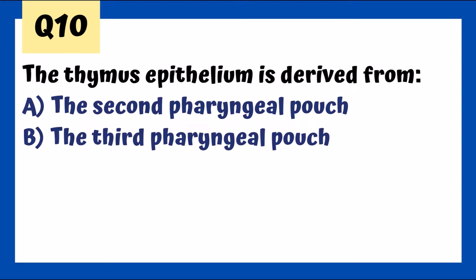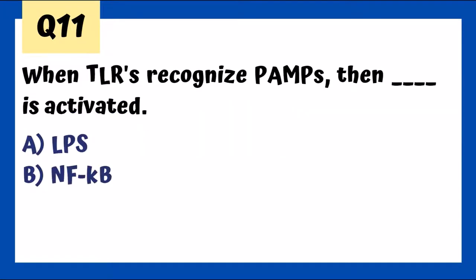The thymus epithelium is derived from the third pharyngeal pouch. This is also associated with DiGeorge syndrome, because in DiGeorge syndrome we have a problem with development of the third pharyngeal pouch leading to lack of the thymus. TLRs — toll-like receptors — recognize PAMPs, and this leads to activation of NF-kappa-B, not LPS. LPS is actually a type of PAMP, the prototypical PAMP.